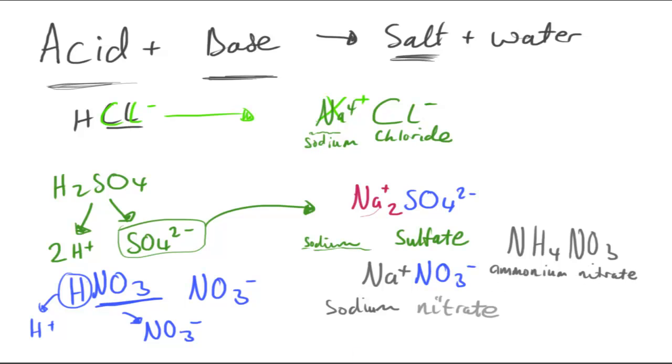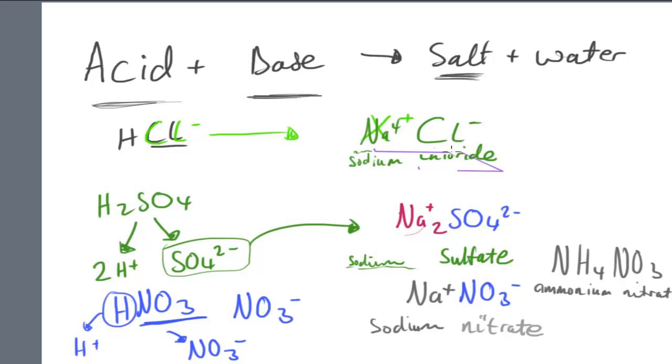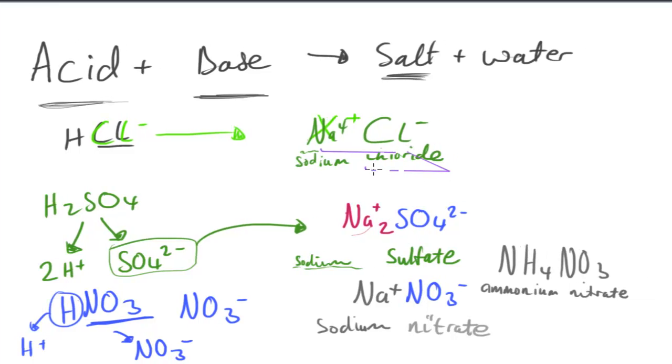So yeah, those are the three main classes of salts which we usually encounter in AS chemistry: chloride, sulfate, and nitrate.